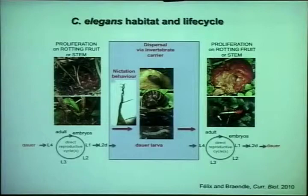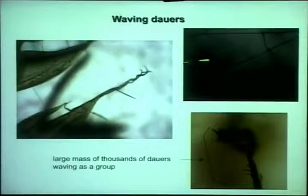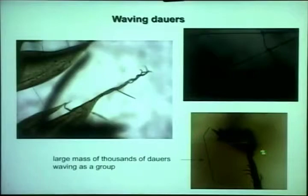Nictation is something which is pretty amazing. Here you see a single dauer nictating on its tail. Here you have small groups of dauers, and very often they like to nictate on the pointed tip of something. But you can also find, when there are many dauers around, huge groups of dauers. What you're seeing here — each of those is a dauer, all this mass is dauers on a rotting apple — and the whole mass in a group is nictating.